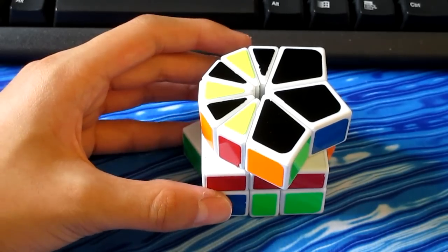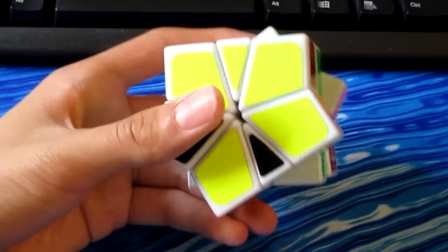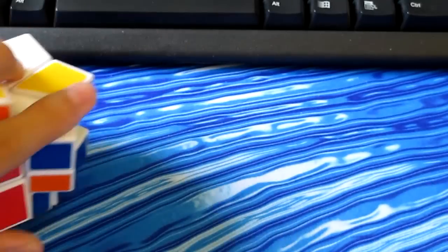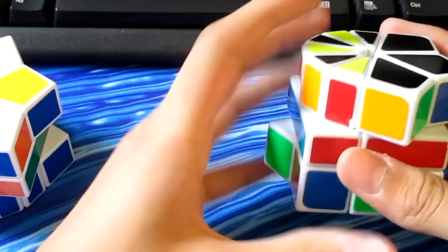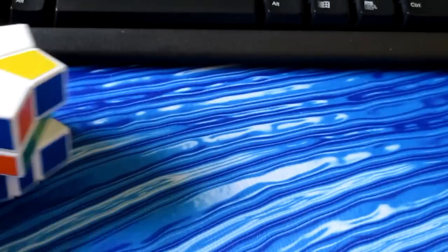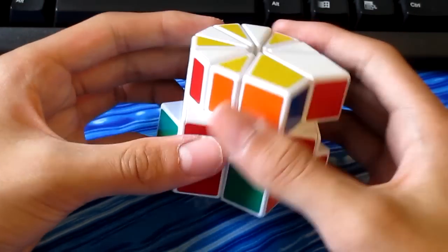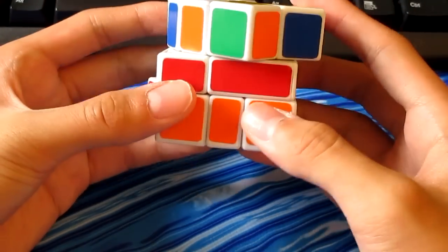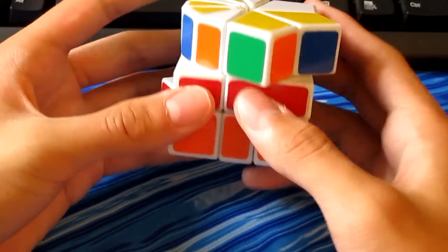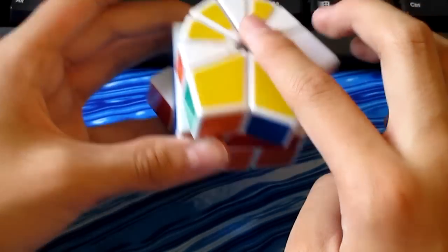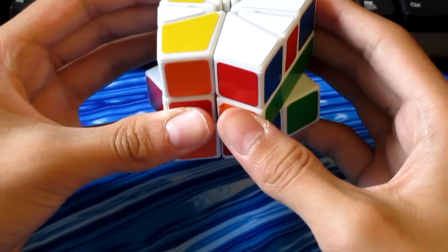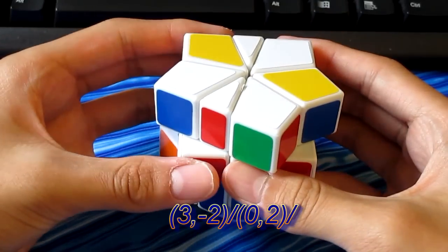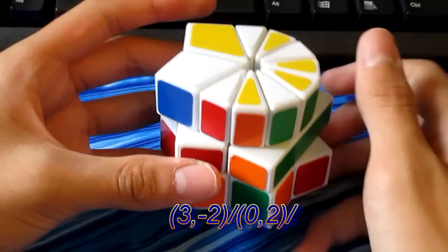Once you have six edges next to each other, there are three cases on the bottom face to get eight edges next to each other: a line like this, a pair, or an L shape. The line and the pair are very easy to deal with. Just bring them up to the top face. However, an L requires more manipulation. Placing the L in the top right portion of the bottom face, break off two edges from the six bundle of edges. Do a three, negative two, slash, zero comma two slash, and now you have your eight edges.